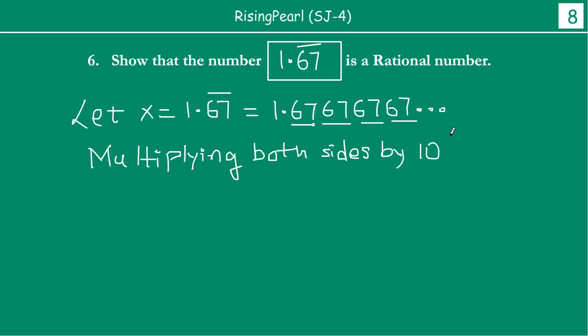And what was our technique? The technique was: however many digits are repeating, we have to multiply that by 10 to the power of that number. So you have two digits repeating, so we have to multiply this by 10 to the power 2, which is basically nothing but 100.